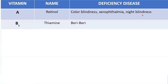Next is vitamin B1, also called thiamine, and its deficiency causes a disease called beriberi. Beriberi is of two types: dry beriberi, which causes improper functioning of the circulatory system and the heart, and wet beriberi, which is associated with muscle weakness and neuropathy.